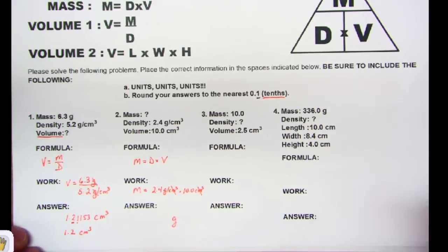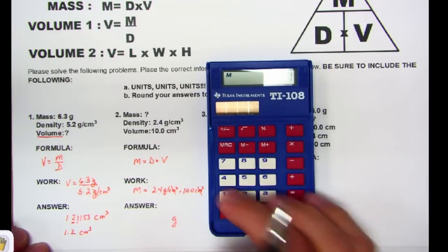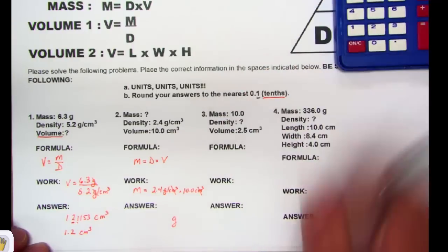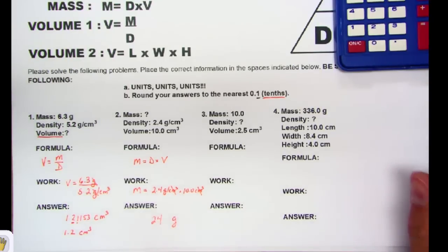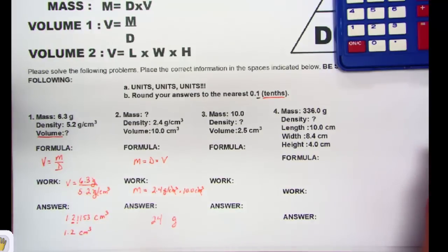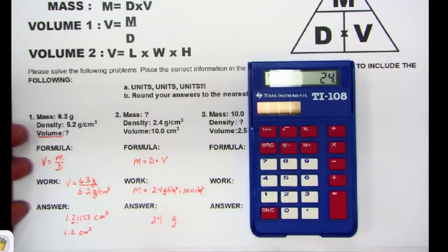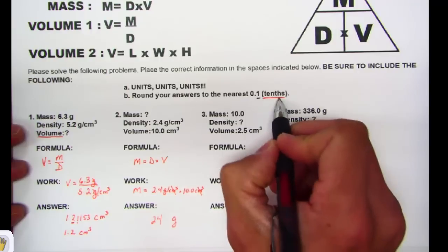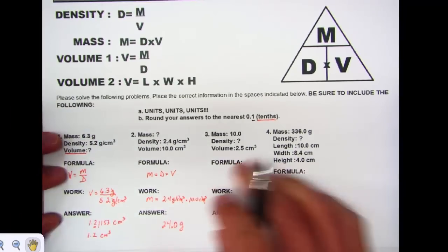Take the calculator and do 2.4 times 10.0, which gives 24. Now you might wonder why use a calculator for that — it's better safe than sorry to avoid mistakes. We get a whole number of 24, but the directions ask for a tenths place, so you must write 24.0 grams.